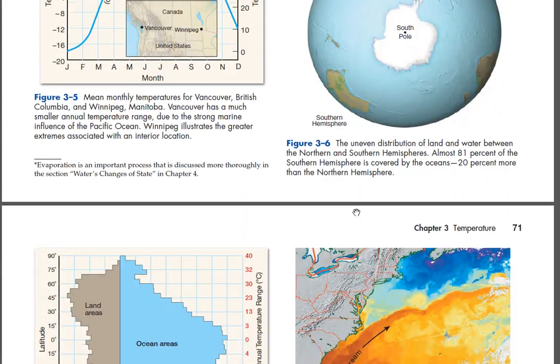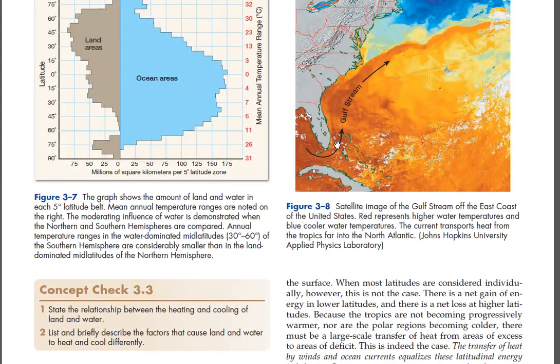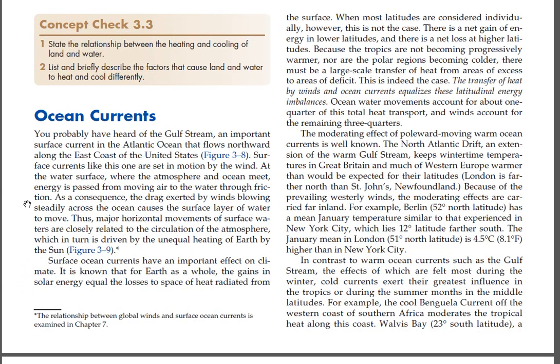Ocean Currents. You probably have heard of the Gulf Stream, an important surface current in the Atlantic Ocean that flows northward along the east coast of the United States (Figure 3-8). Surface currents like this one are set in motion by the wind. At the water surface, where the atmosphere and ocean meet, energy is passed from moving air to the water through friction. The drag exerted by winds blowing steadily across the ocean causes the surface layer of water to move. Thus, major horizontal movements of surface waters are closely related to the circulation of the atmosphere, which in turn is driven by the unequal heating of Earth by the Sun (Figure 3-9).